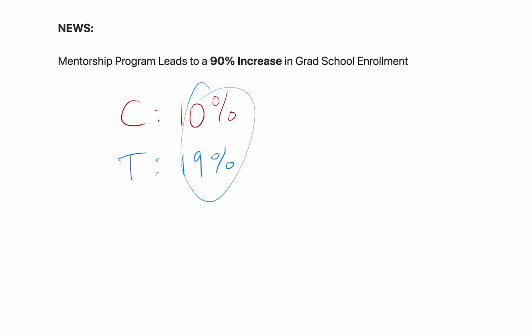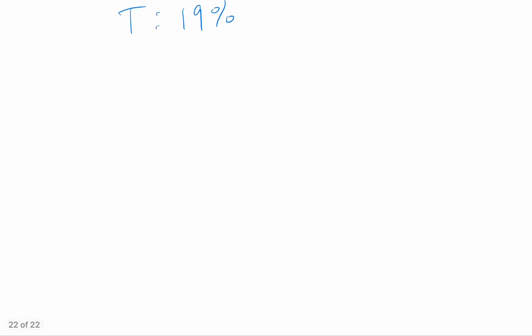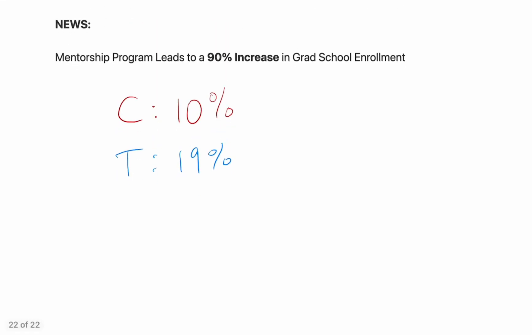And you're thinking, that's kind of false advertising. To say a 90% increase, but this change doesn't look like 90%. So in this video, I'm going to explain the basics of what a percent change is, and also the concept of percentage point. By the end, we'll make sense of this, because the researchers weren't lying, but it's certainly a little deceptive if you don't fully understand the difference between percent and percentage point.